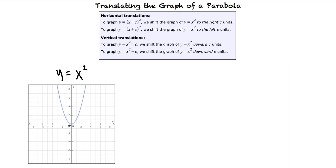Let's say we want to translate the graph of y equals x squared to make the graph of y equals the quantity x minus 1 squared minus 5. Since we've subtracted 1 from x inside the parentheses,